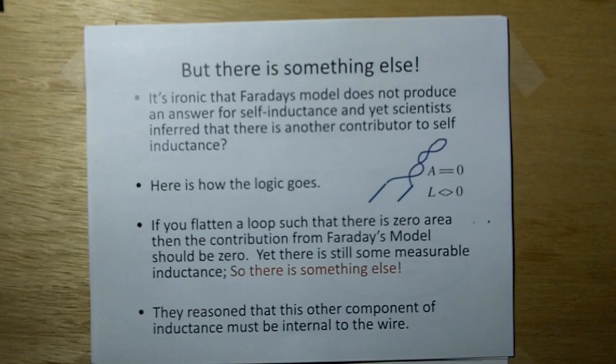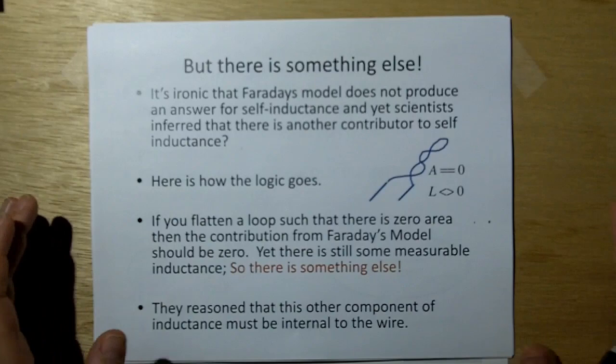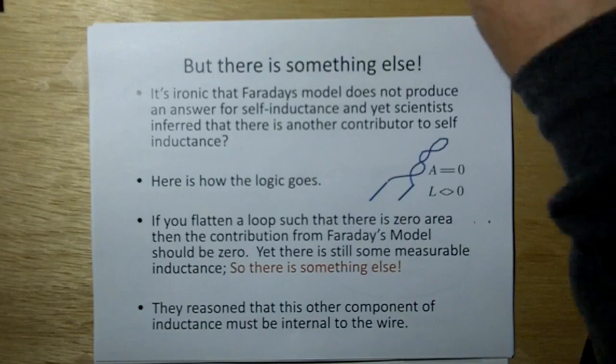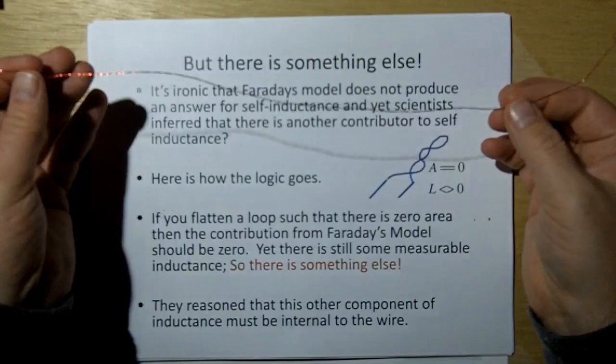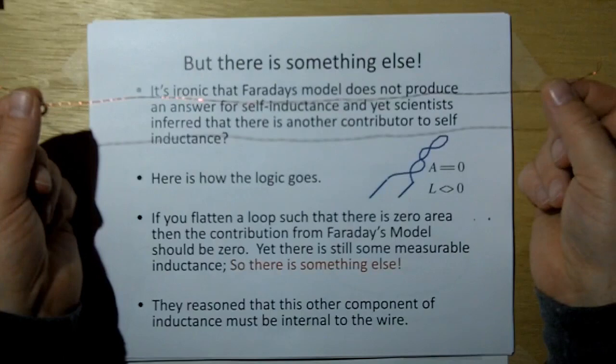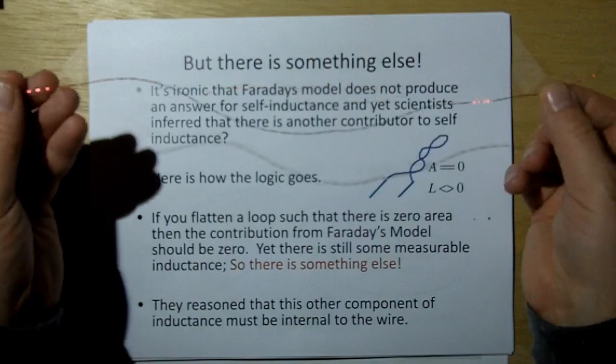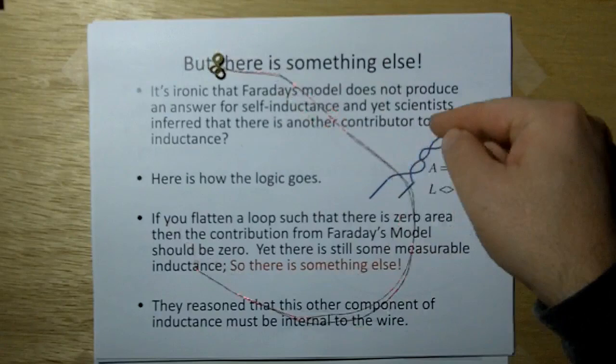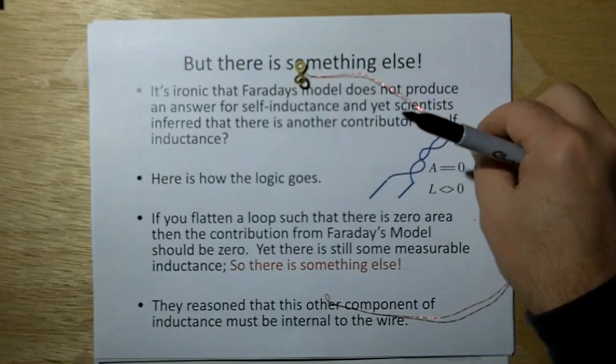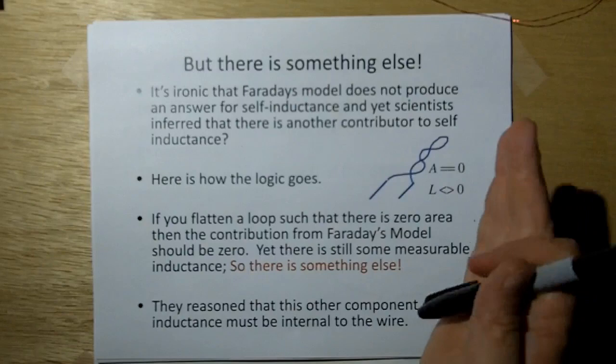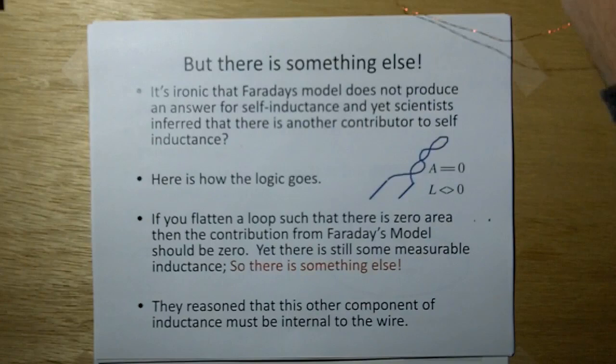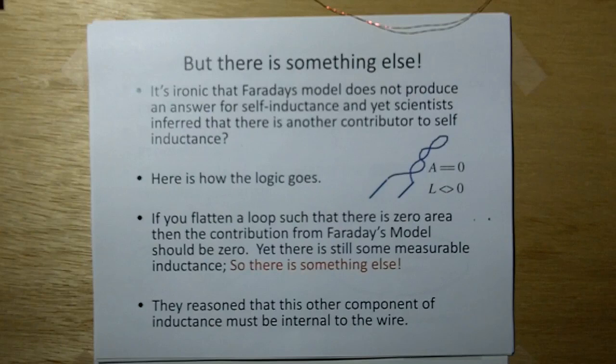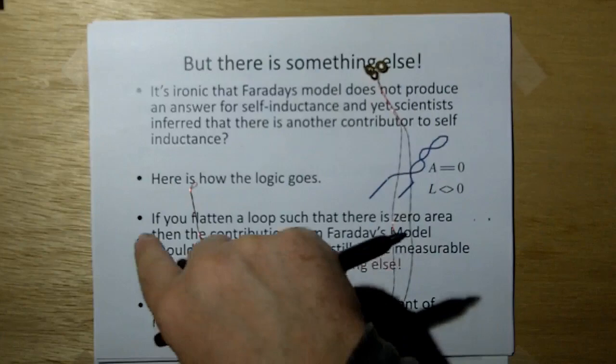It's ironic that the Faraday's model does not produce an answer for self-inductance. Yet scientists inferred that there's something else contributing to self-inductance. Here's how the logic goes. If you flatten a loop, this is a piece of wire that's been twisted back on itself, a collapsed loop. There's actually two strands of wire, one going up and the other coming back. I just took a loop and twisted up the wire in a drill. Now because this has zero area between the two pieces of wire, except for maybe this little loop on the end, you should expect that the inductance should be zero. Yet there's still a measurable inductance with this collapsed loop.